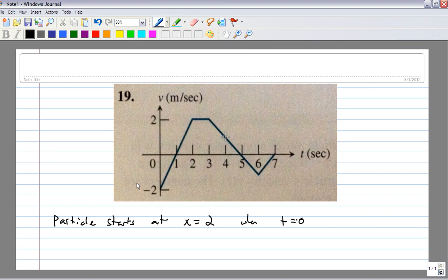You're asked to find where the particle is at the end of the trip. You're like, how do I do that? I know where it starts, and I'm given this graph. What kind of graph is this? Well, time, velocity, this is a velocity graph.